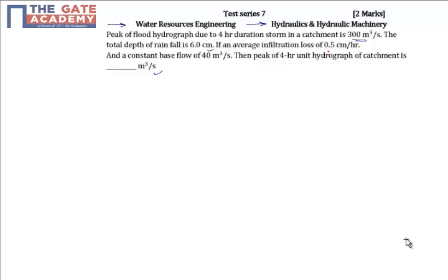Infiltration loss is 0.5 centimeter per hour. Constant base flow is 40 meter cube per second. Now, infiltration loss would be 0.5 centimeter per hour for 4 hours, that is 2 centimeter. Base flow is 40 meter cube per second.